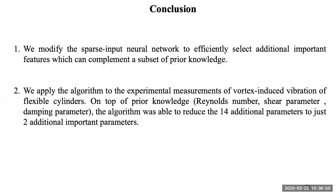Finally, as our conclusion for this work: first, we modify the sparse input neural network technique by differentiating the importance of prior knowledge and additional features, efficiently selecting additional important features that complement the prior knowledge. Second, we apply this algorithm to experimental measurements of VIV for flexible cylinders, and the results show that on top of the prior knowledge — Reynolds number, shear parameter, and damping parameter — the feature selection algorithm reduced 14 additional parameters to just two additional important parameters. The results provide new insights into the flexible cylinder VIV process. Thank you.